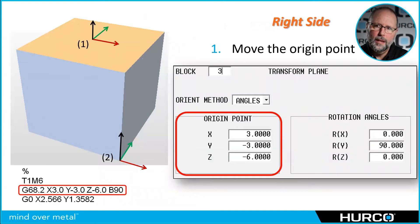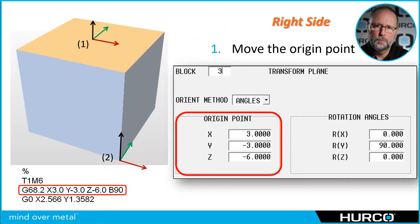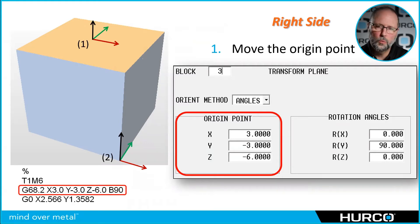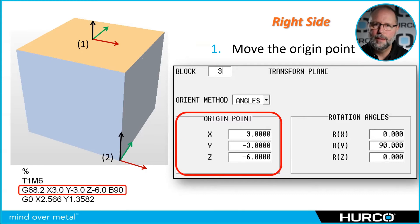Transform Plane is a conversational block that's going to allow us to do both things we need to do: move the origin point, and rotate the tool into position so it's perpendicular to the work plane. In the bottom left corner you'll notice a G-code line that follows along with this. In G-code it works identically — we call it G68.2, which is the Transform Plane command, and then the X, Y, Z, A, B, C rotations work just like the conversational version. But we're going to focus on conversational here.